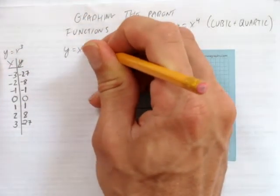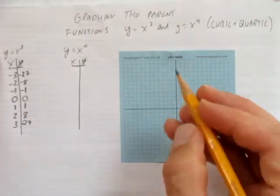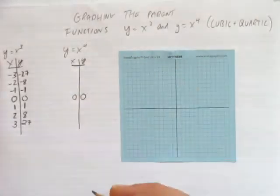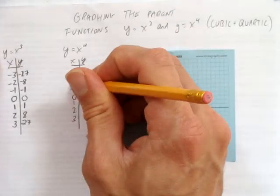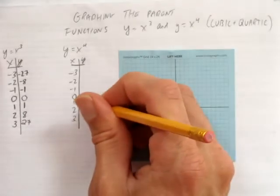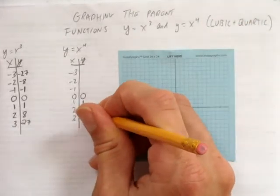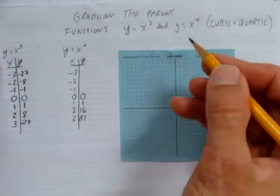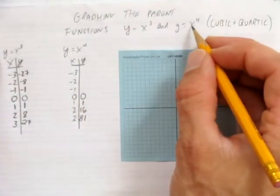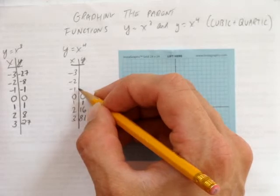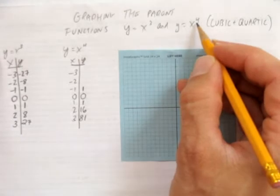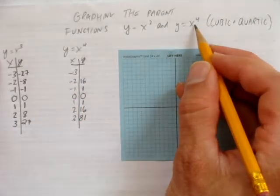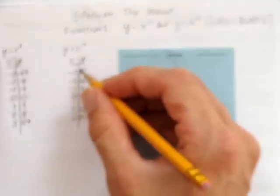Now let's make the table for y equals x to the power of 4, since the scale will be affected by these values. If you put 0 in, 0 to the power of 4 is still 0. We'll pick easy x values on either side. 1 to the power of 4 is still 1. 2 to the power of 4 is 16. 3 to the power of 4 is 3 times 3 times 3 times 3, which is 81. For the negatives, negative 1 to the power of 4 gives a positive because you multiply negative 1 four times — so positive 1. Negative 2 to the power of 4 is also positive 16, and negative 3 to the power of 4 gives positive 81 because there are four negatives.